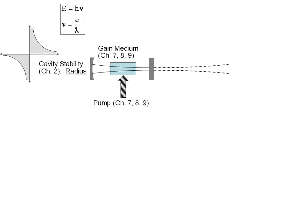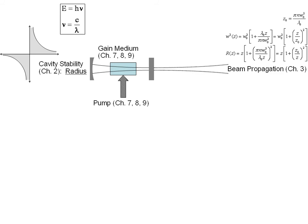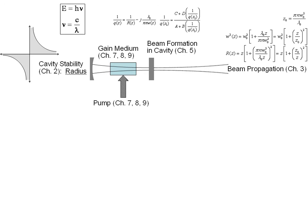We've learned about cavities and stability. We've learned about beam propagation. We actually did that first and have some equations to see how a Gaussian beam will propagate. We know a cavity will form a Gaussian beam, provided that it's stable.